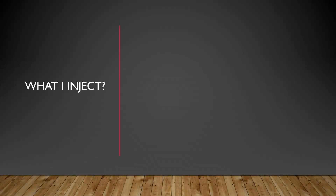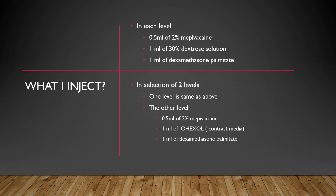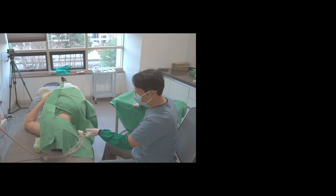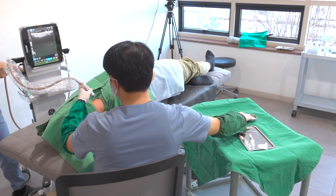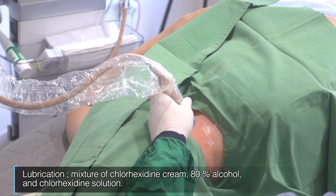At each level, I inject 0.5 ml of 2% mepivacaine, 1 ml of 30% dextrose solution, and 1 ml of dexamethasone palmitate. I always use 1 ml of iohexol contrast media at one point. Before pre-scanning, I apply some liquefied gel for skin lubrication. I use a mixture of chlorhexidine cream, 80% alcohol, and chlorhexidine solution.